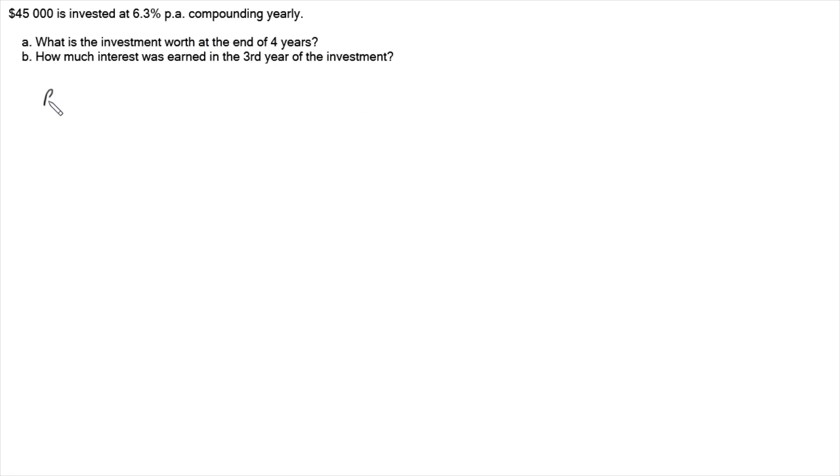To answer this question, I'm going to use the recurrence relation for compound interest. The recurrence relation for compound interest says that each term, or the next term, is given by R times the previous term.